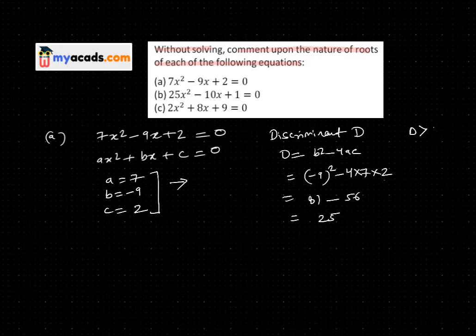So D = 25, which is greater than 0. When D > 0, this means the roots are real and unequal.